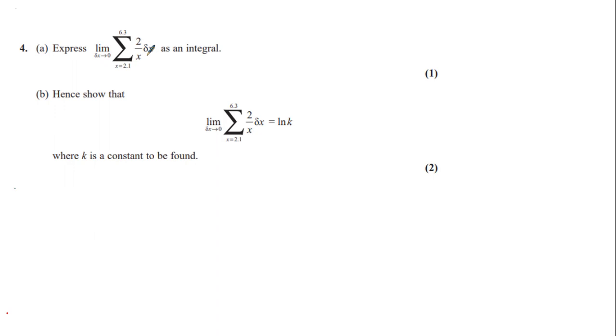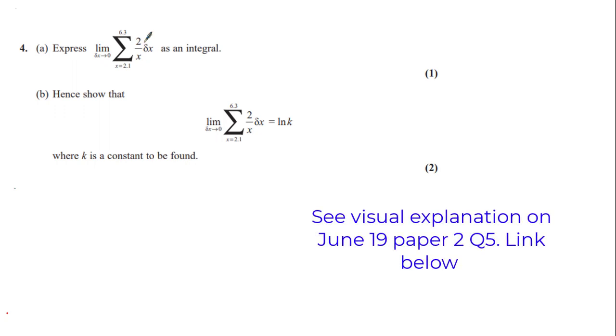As delta x tends to 0, in other words, as delta x gets smaller and smaller, the rectangles get thinner and thinner to the point where they actually span the entire area underneath the curve 2 over x from x equals 2.1 to 6.3. And we actually come to find out that this Riemann sum would be equivalent to the integral of 2 over x from 2.1 to 6.3 with respect to x.